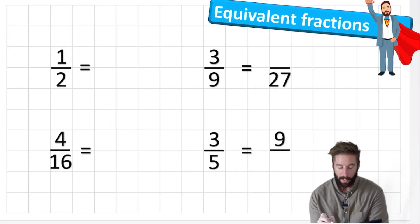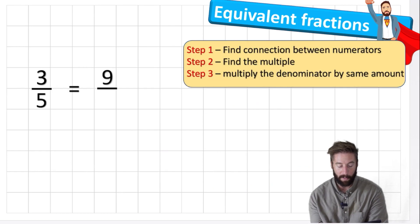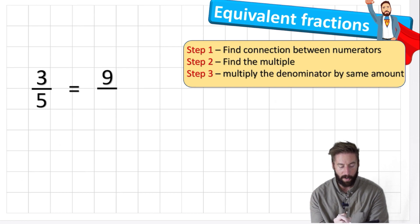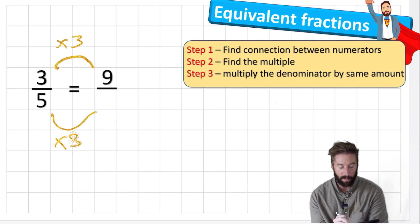Let's look at one last example — this time we've been given the other numerator, which is nine. Step one: find the connection between the numerators. Getting from three to nine — three, six, nine — means we're multiplying by three. Whatever we've done to the numerator, we now do to the denominator: five times three is fifteen. So nine fifteenths is the same as three fifths.